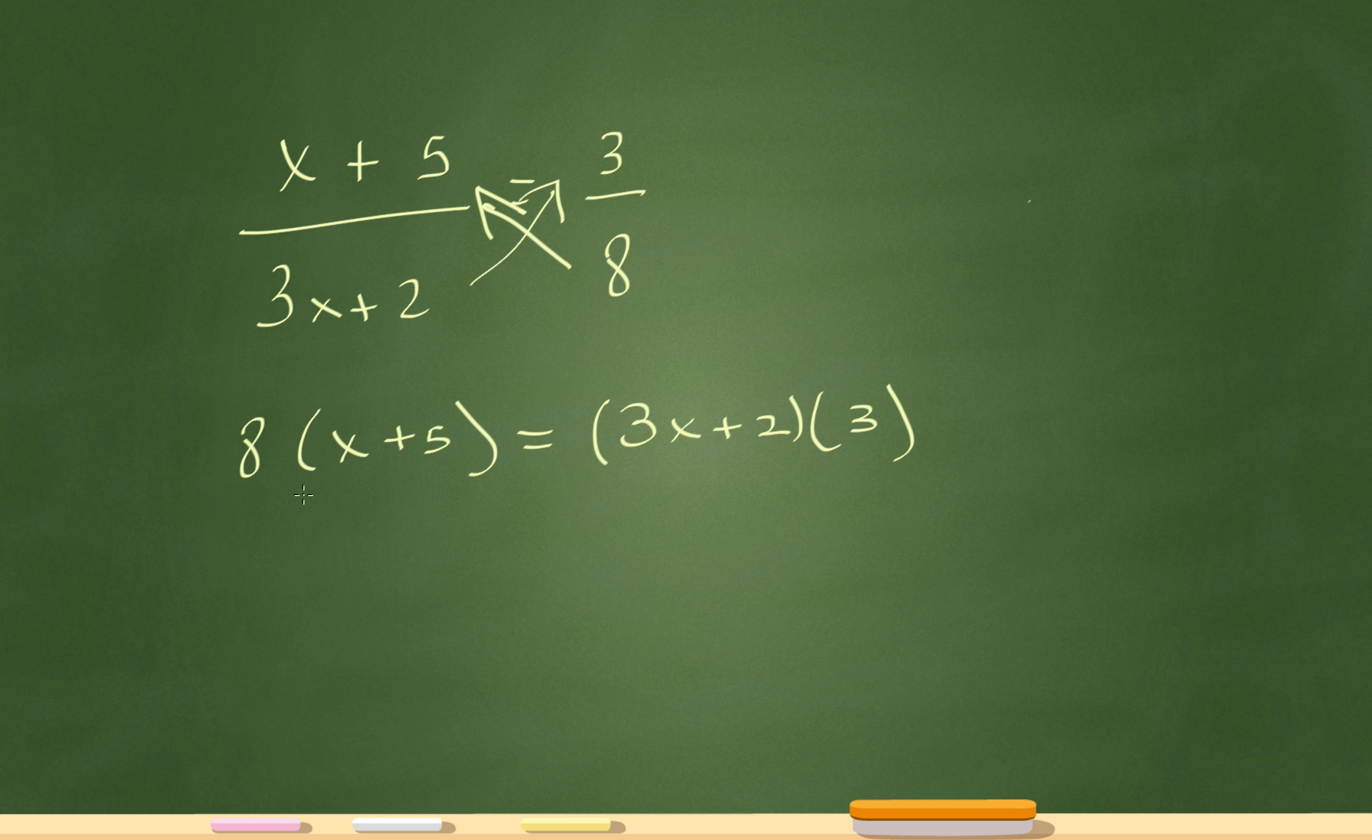And then we'll distribute the numbers. So 8x plus 40 equals 9x plus 6. That 3 just gets multiplied there and there.